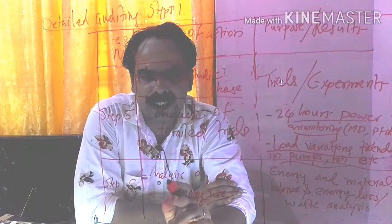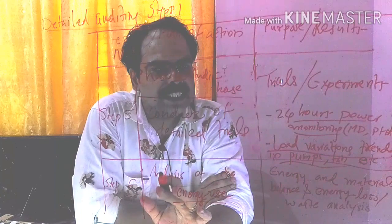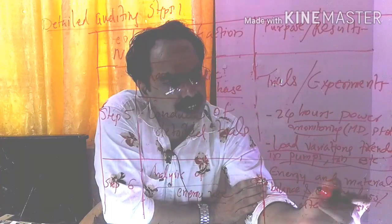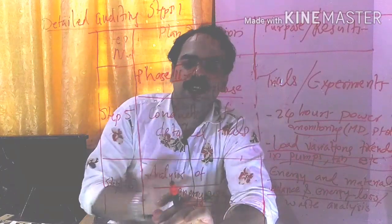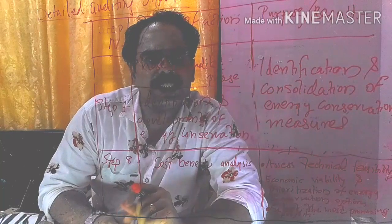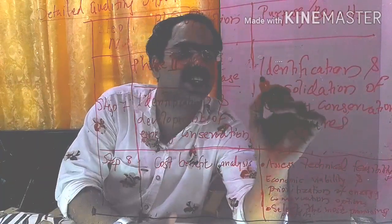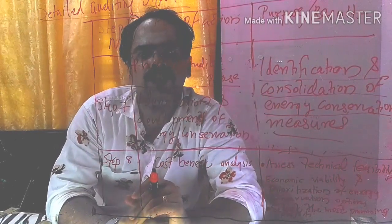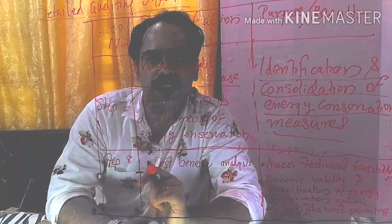Step six is the analysis of energy use. After making the trials, we go through the analysis section — energy and material balance, identifying where energy losses and waste are occurring, and how to manage the waste. Step seven involves identification and consolidation of energy conservation measures — identifying which parameters related to energy conservation can be improved in the system.